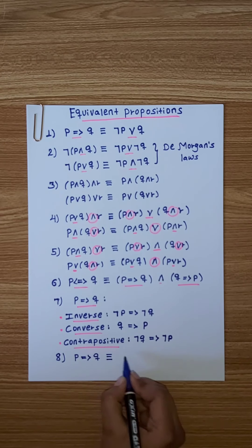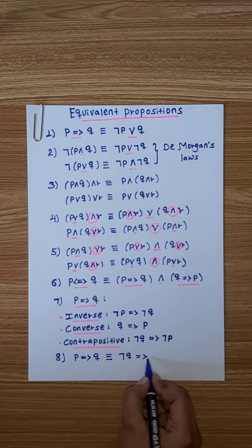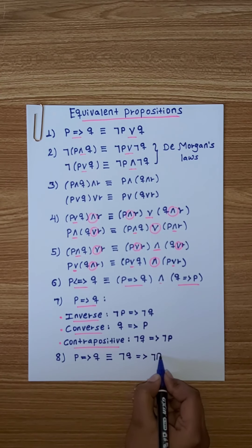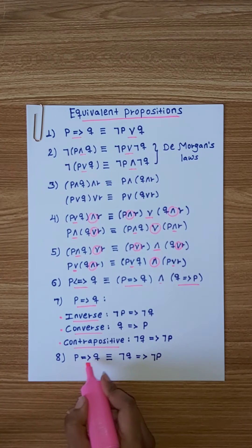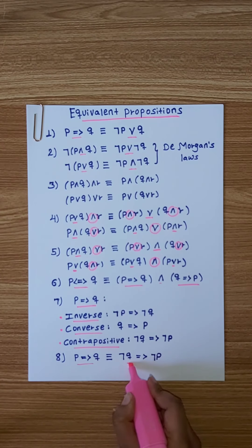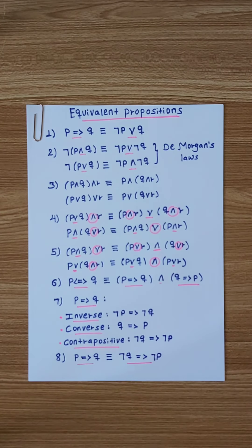So the statement: if P implies Q, its equivalent is the contrapositive. The converse and inverse are also equivalent to each other, but not to the original.